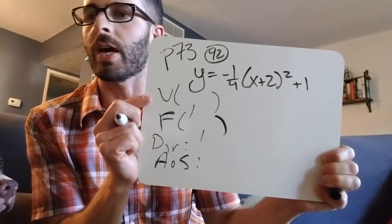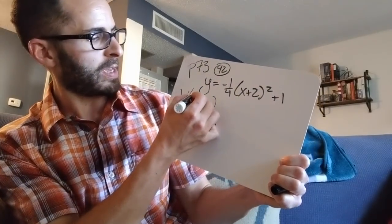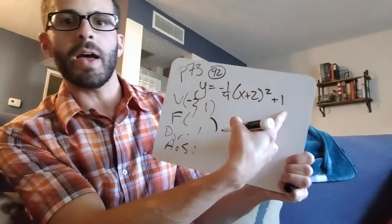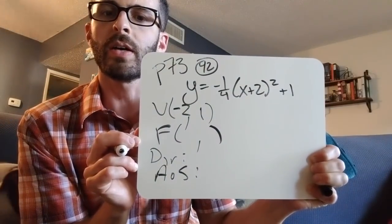All right, vertex. We're going to start with that. We know anything in the parentheses is the opposite. So I got the opposite of positive two and the same as what's out there. So our vertex is negative two comma one.